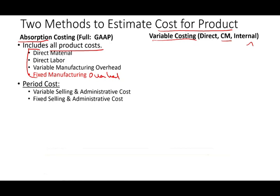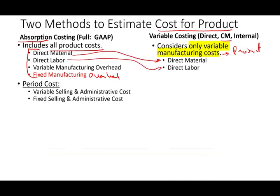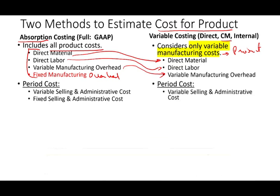Variable costing only considers variable manufacturing costs when costing the product: direct material, direct labor, and variable manufacturing overhead. Period costs include variable selling and administrative and fixed selling and administrative.